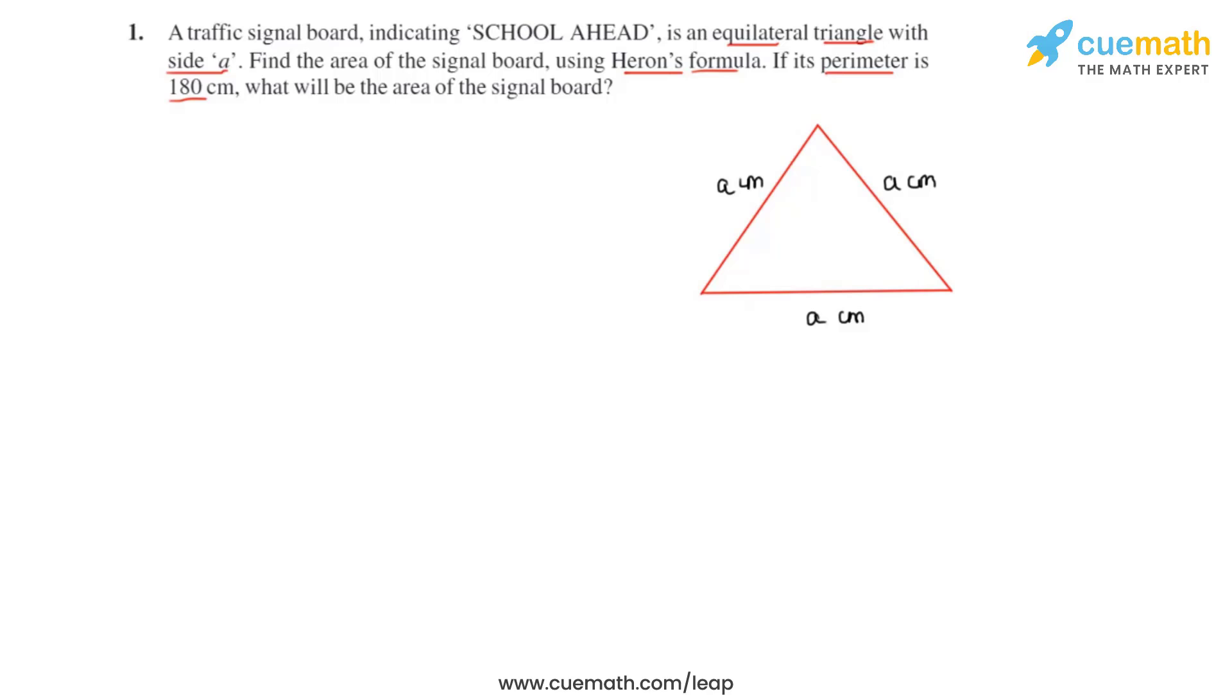Now we can write that the perimeter is equal to 180 centimeters which is calculated by adding up all the sides. So let's add A plus A plus A equals 180. So from this we can say that three times A equals 180.